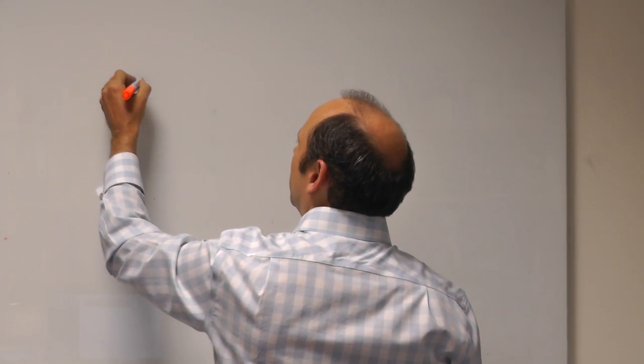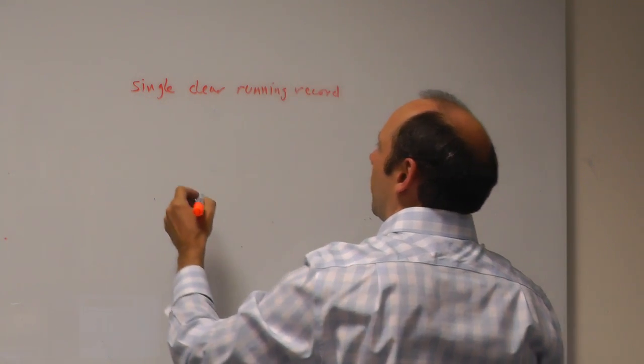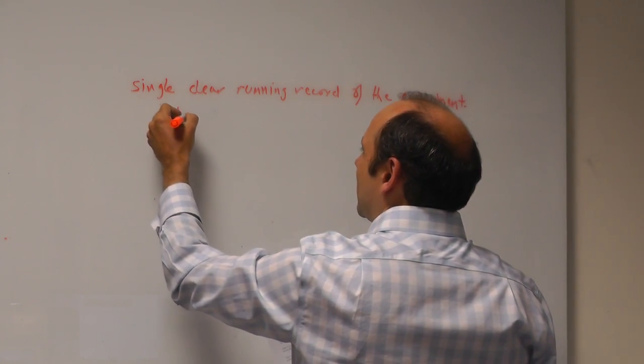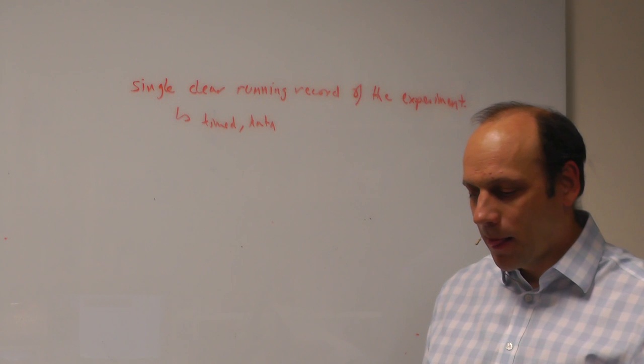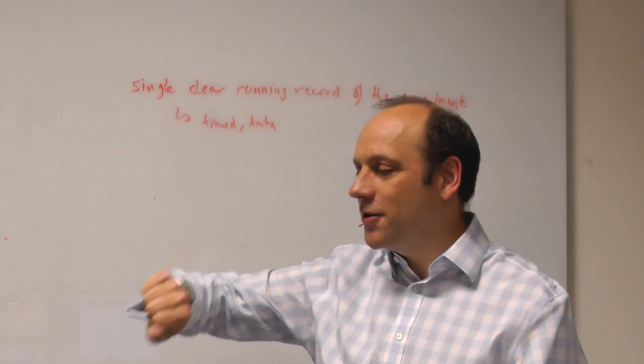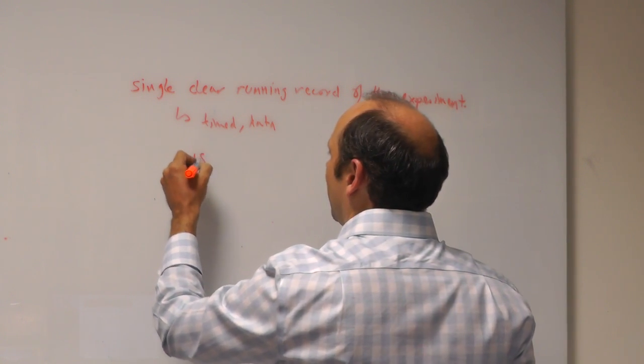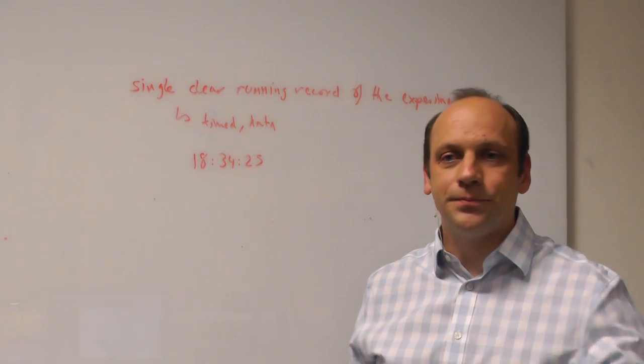And his argument was that we should keep logbooks, where we write every measurement down as we make it, and precisely the measurement that we read. So, for instance, we should have a single clear running record of our experiment. That is, it's timed and dated. It's sequential. And when we're writing down numbers, we should record the actual number. So I'm reading my watch here, and it says it's 6:34 and 25 seconds. So that's 18, 34, 25.